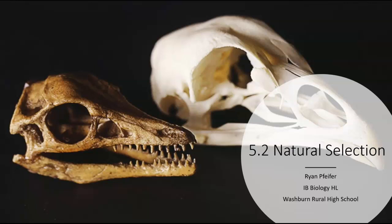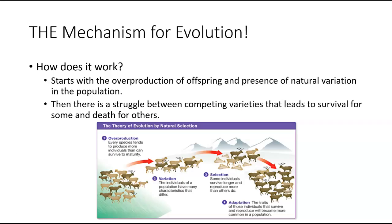Evolution is the cumulative change of the genetics within a population over time. Natural selection is a force by which those genetic changes change over time. We need to talk about what drives evolution — what changes environmentally and what changes genetically within a population of a particular species really gets at the large-scale change we see take place within a species over time.